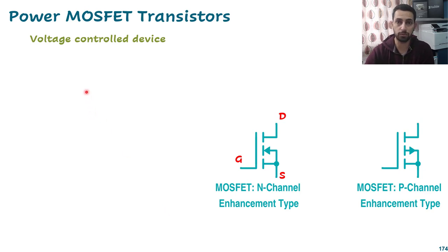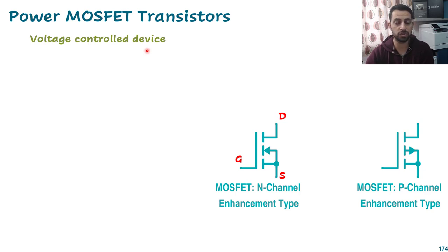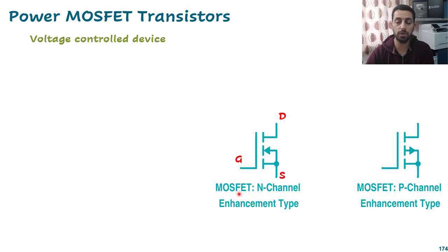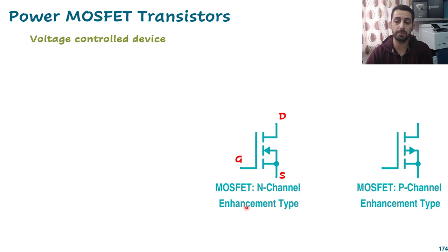As we know from electronics fundamentals, MOSFETs are voltage-controlled devices. We don't need to push current into the gate to turn them on like BJT transistors. We have three terminals: gate, drain, and source. There are two types — N-channel and P-channel — and MOSFETs can be depletion type or enhancement type, but the most popular is the enhancement type, so that's what we'll focus on.